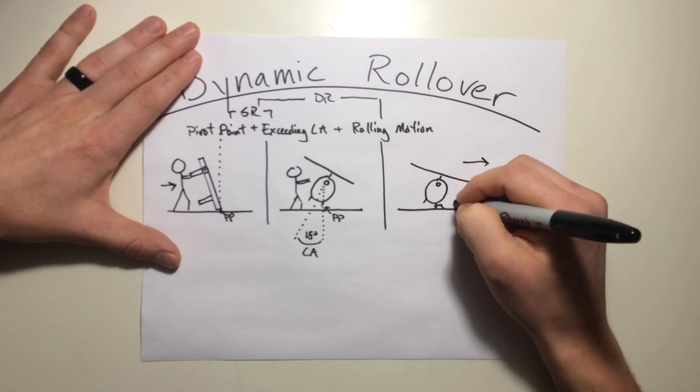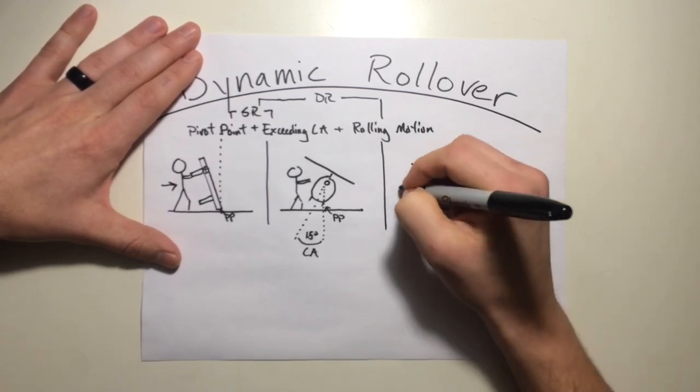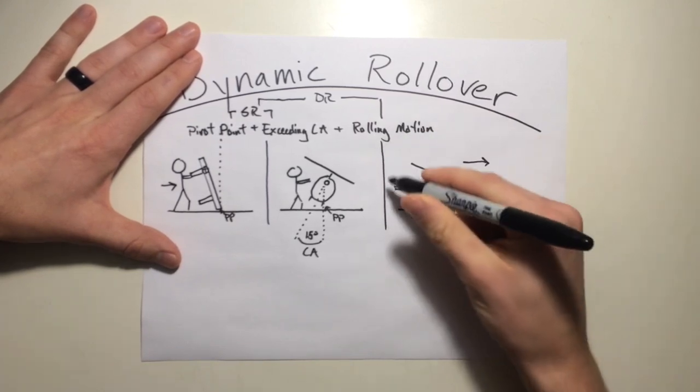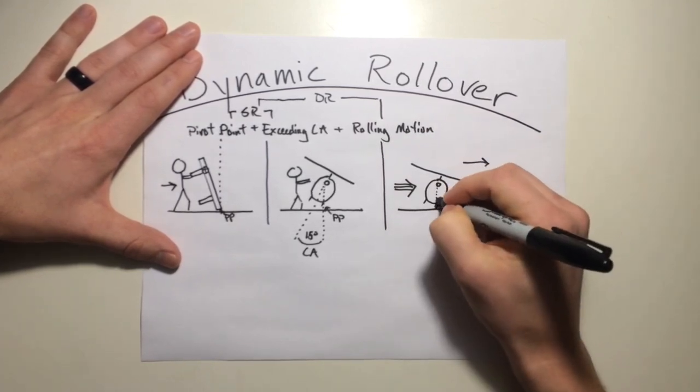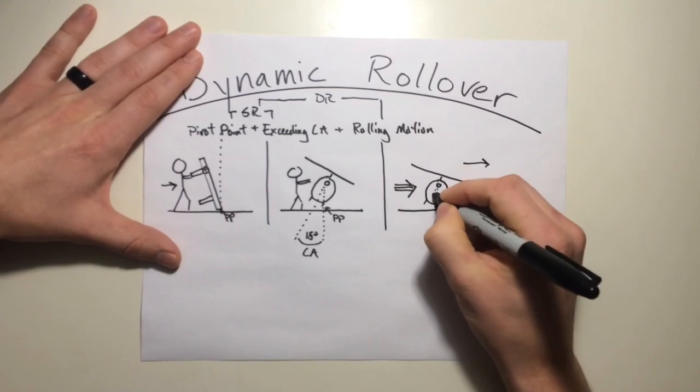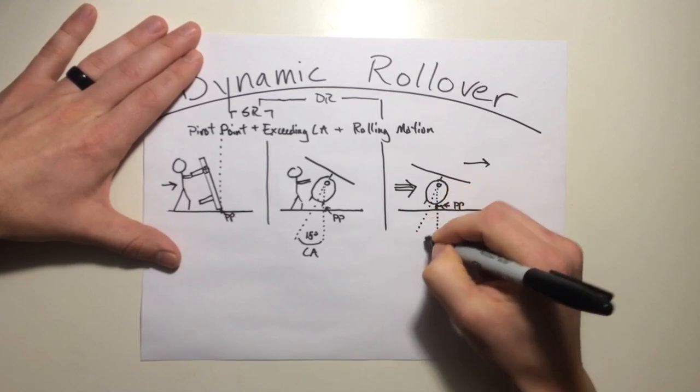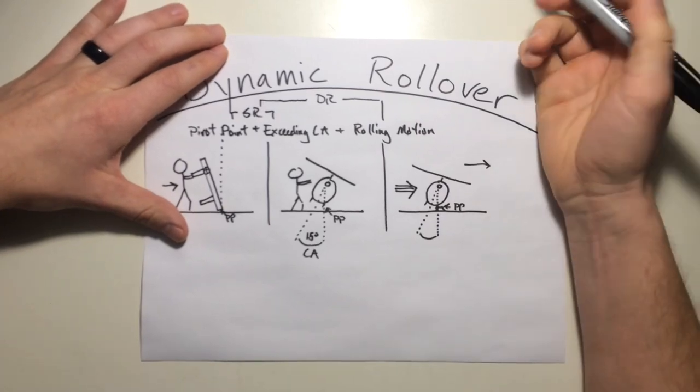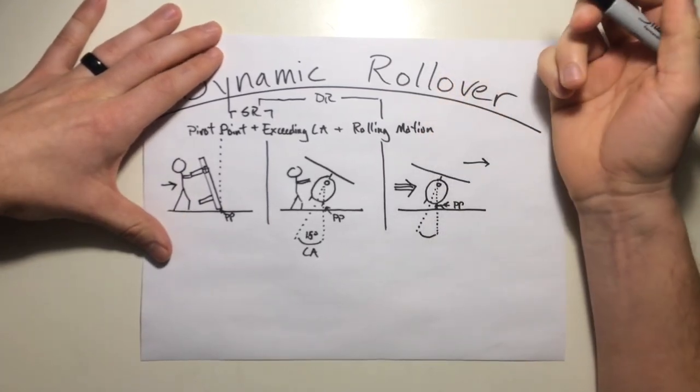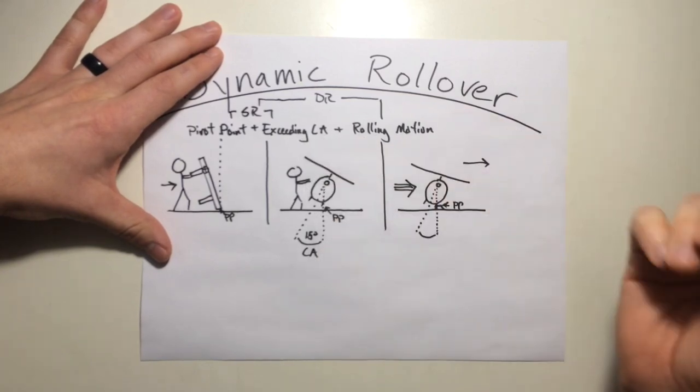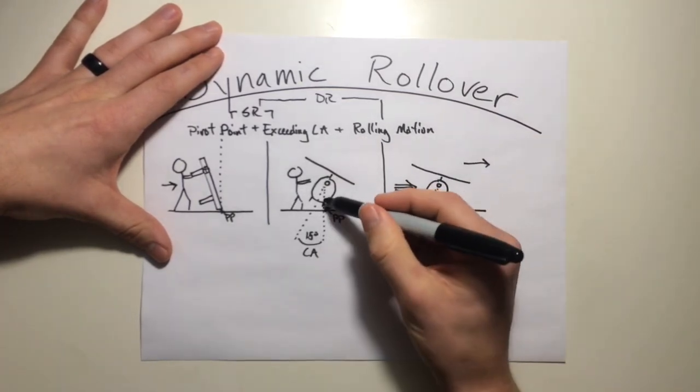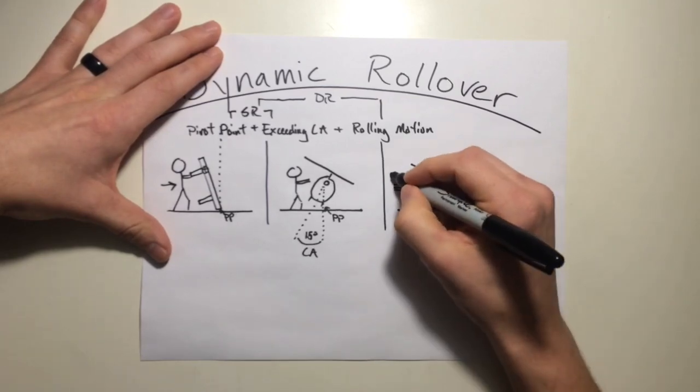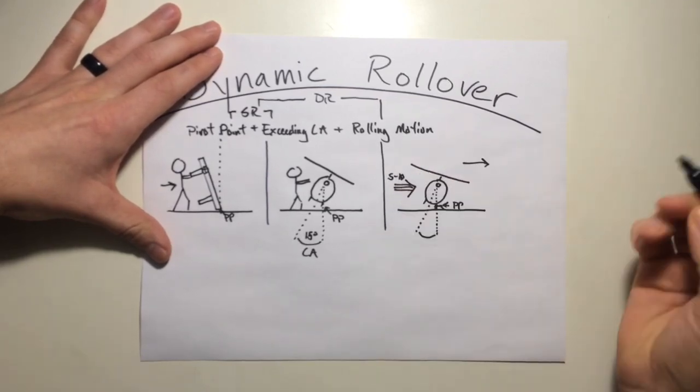We've already got some rolling motion in the object and now we exceed a critical angle, which now the critical angle is going to be slightly different. Due to Newton's third law of motion and object in motion tends to stay in motion, this is going to affect this rolling motion and exceeding the critical angle. Whereas in a static condition, it might have only taken, say, 15 degrees.